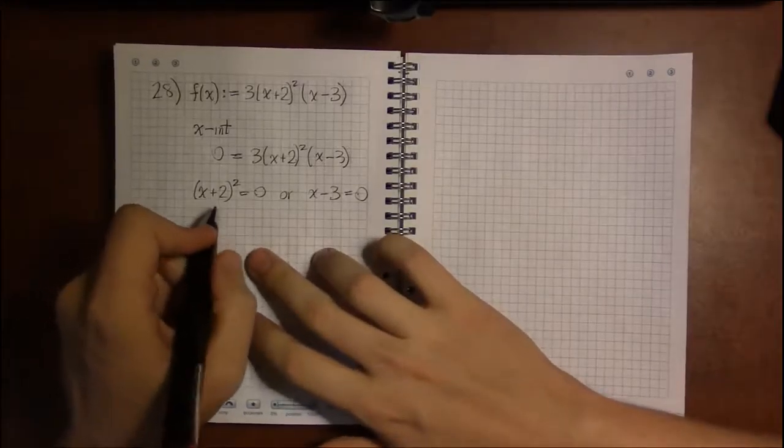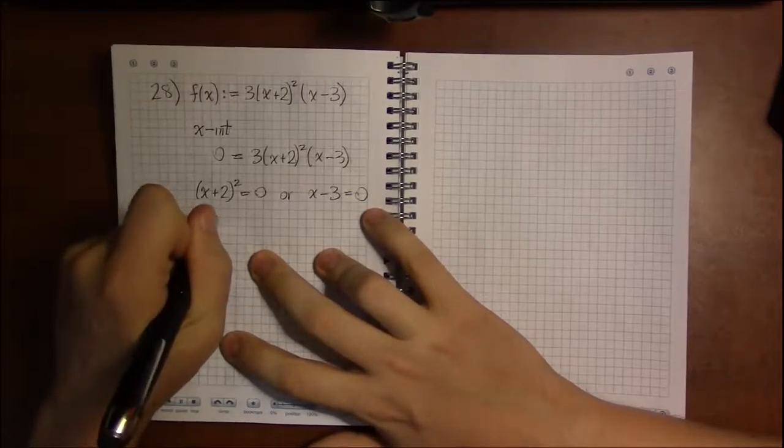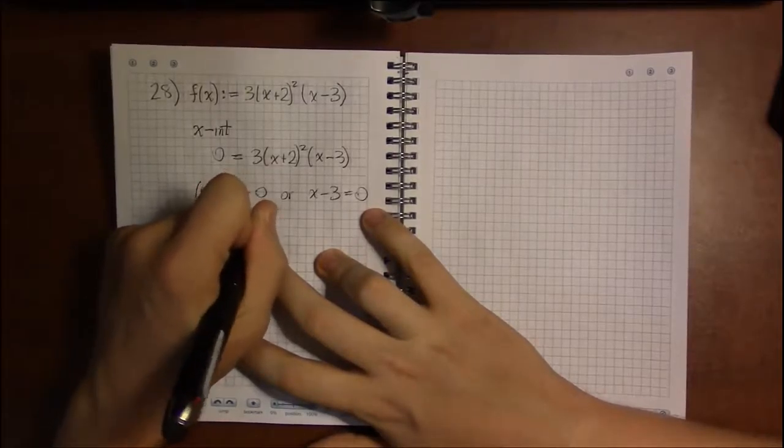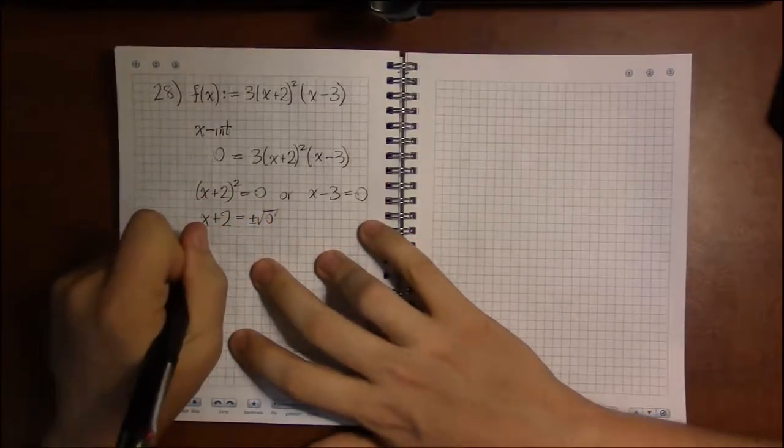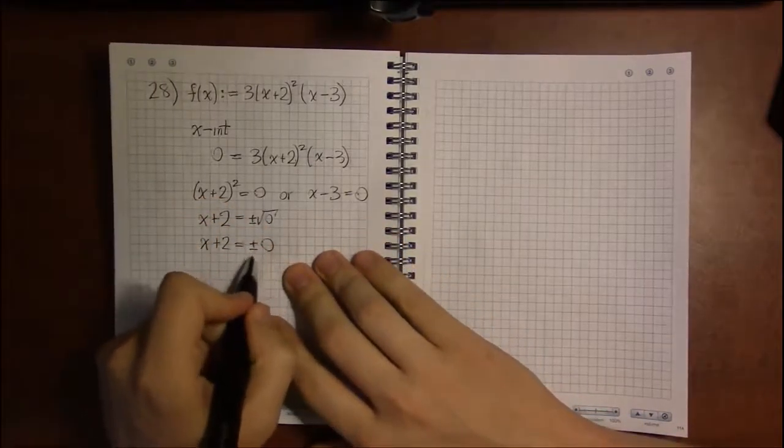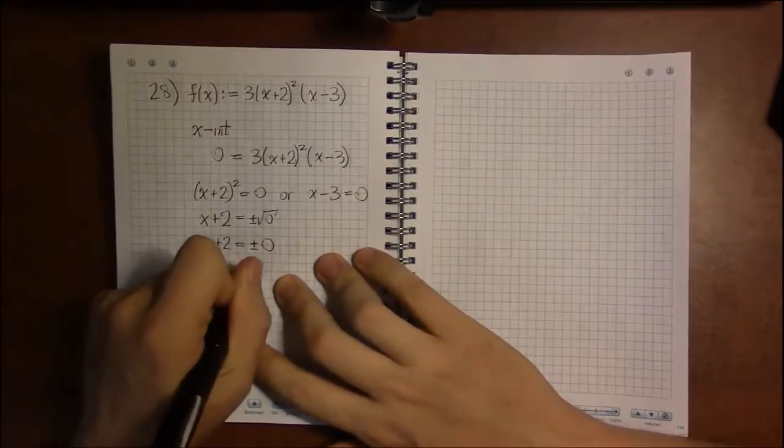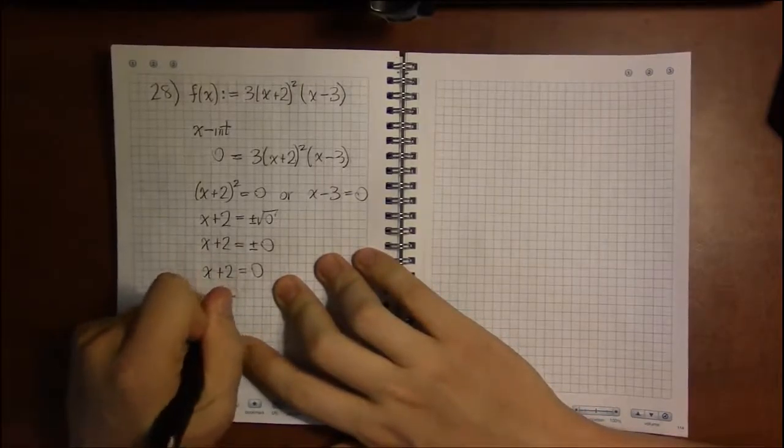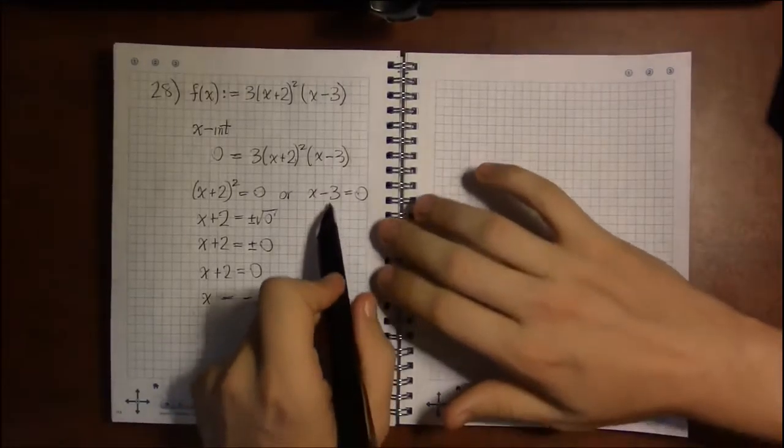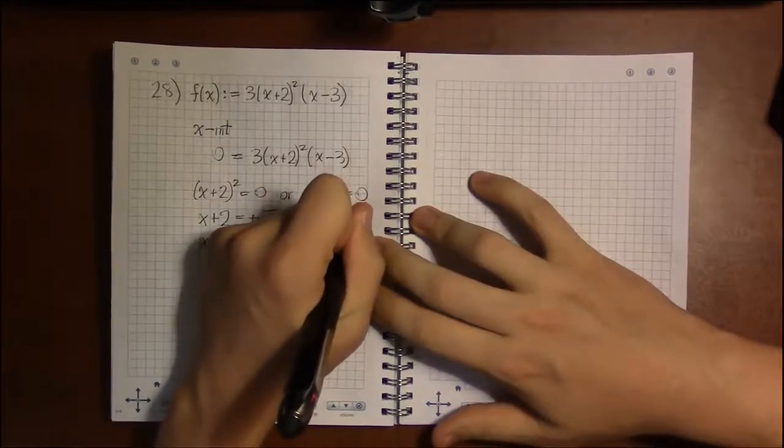And so we go through and solve both at the same time. Take square roots of both sides, and I'll add the obligatory plus or minus, only in this case it's really not going to matter, simply because the square root of 0 is 0, and plus 0 is the same thing as minus 0. So this is just x + 2 = 0, so our first x-intercept is x = -2.